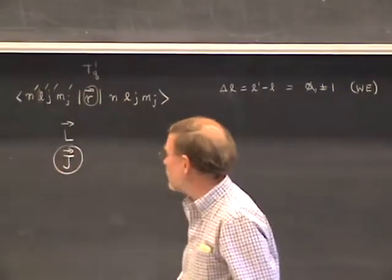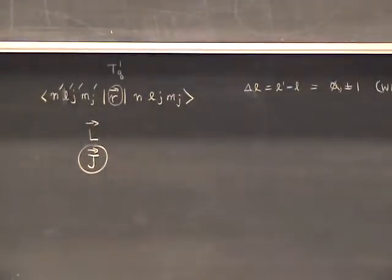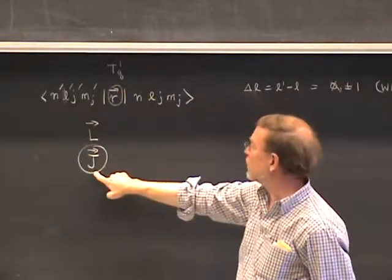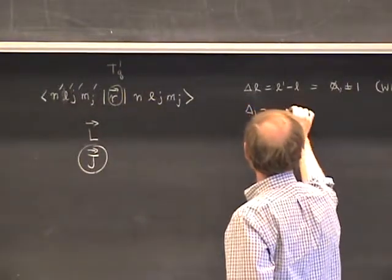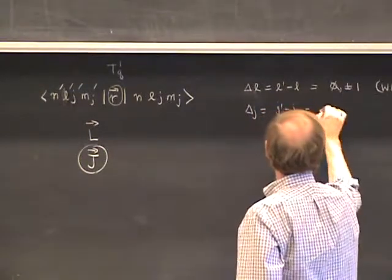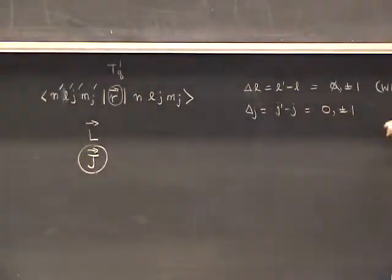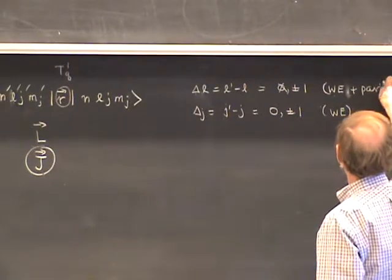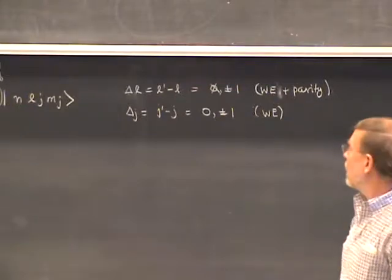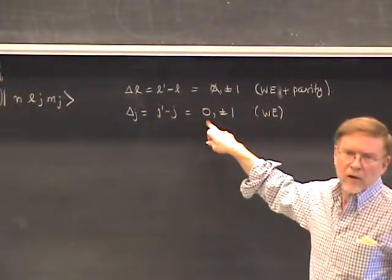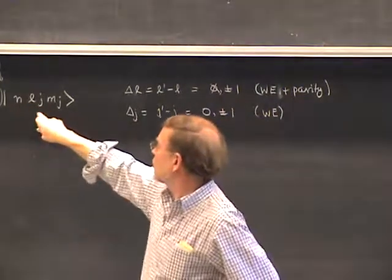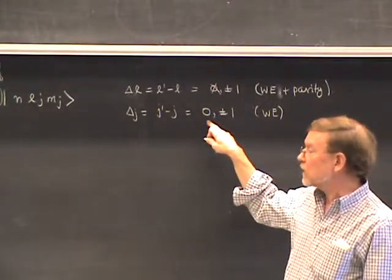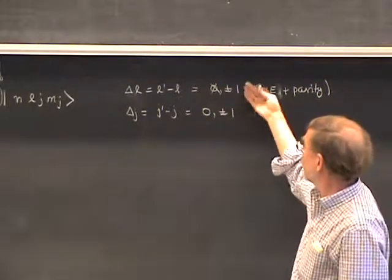Now we also have rotations generated by J — these are overall rotations — and we have J quantum numbers on both sides. Since the position operator is an irreducible tensor operator with respect to total rotations, we get another selection rule: ΔJ = J′ − J equals zero or ±1, again from the Wigner-Eckart theorem. Parity excludes ΔL = 0 but parity has no effect on ΔJ = 0, since parity is a function of L, not J. The result is that ΔJ = 0 is allowed — a slight difference between the L and J rules.